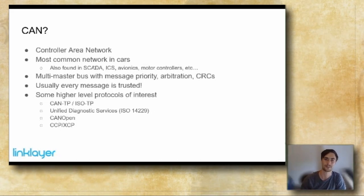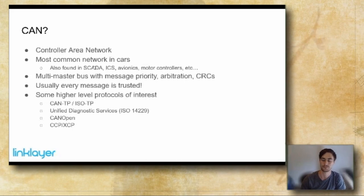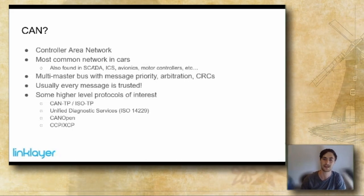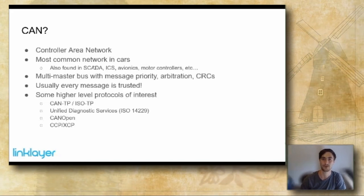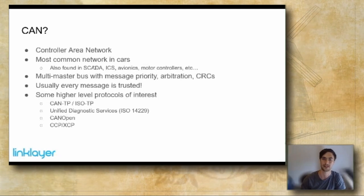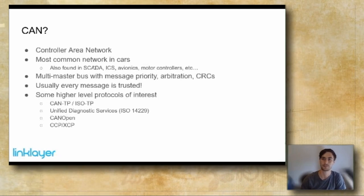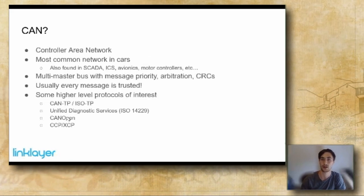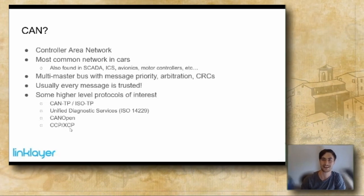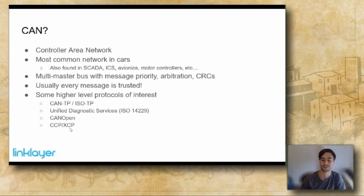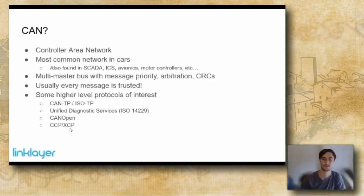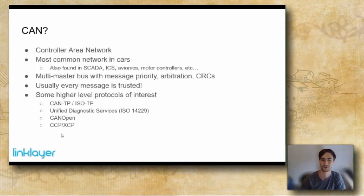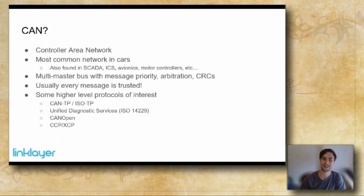There are also higher-level protocols on CAN. CAN-TP and ISO-TP allow you to chain frames together to get up to 4,095 bytes. Built on top of that is Unified Diagnostic Services (UDS), an application protocol for vehicle diagnostics — whenever a mechanic plugs a scan tool into your vehicle, they're likely using UDS. There's also CAN-OPEN, used heavily in motor control, and CCP and XCP — calibration protocols that are sometimes left enabled on controllers and can be used maliciously.